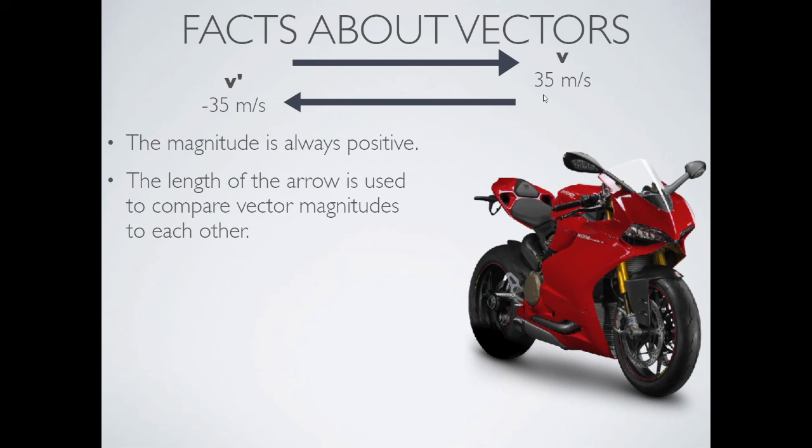Look at these two velocity vectors here. One is pointing to the right. It's positive 35 meters per second. And one is pointing to the left. And it's negative 35 meters per second prime, this little prime here. I often use that when we have the same letter for each vector, but we're talking about two different ones. I give one of them a little prime so that I denote that that's a different vector. So these two vectors are the same length, but they're pointing in opposite directions, hence the negative for one of them. But the magnitude of both of these is the same. 35 positive meters per second.